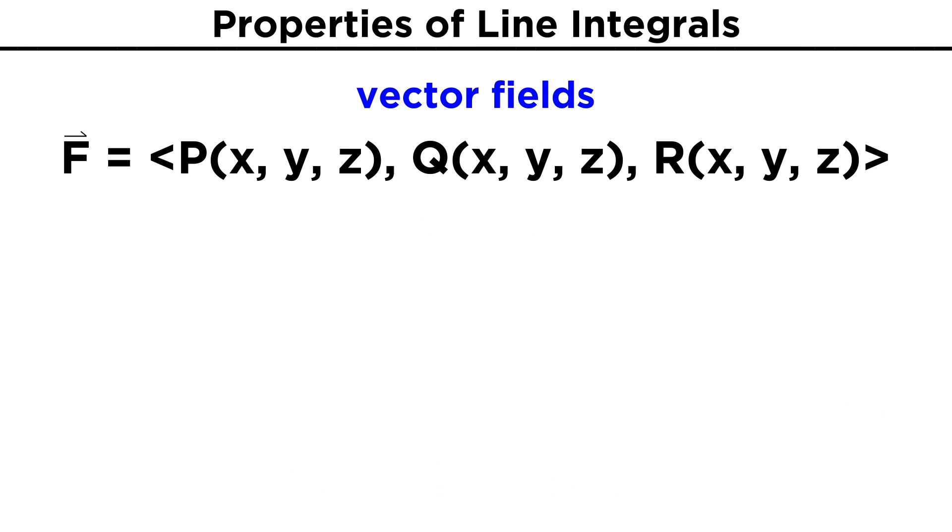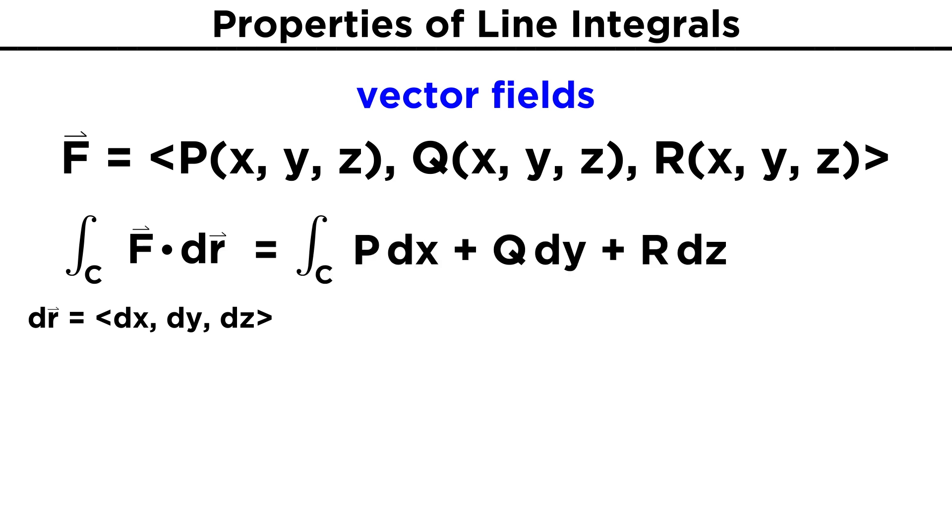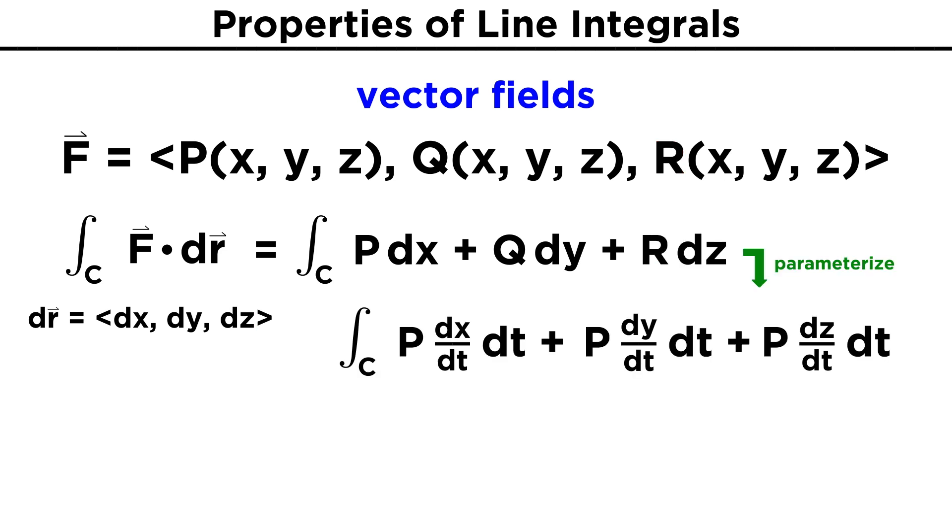Additionally, line integrals become very useful with vector fields. Recall that vector fields have the form f equals p x, y, z, q x, y, z, r x, y, z. The line integral of this vector field along some curve c is given by the integral along c of f dot dr, where dr is the vector dx dy dz. Going through the dot product, we can see that the line integral can be expressed as the integral over c of p dx plus q dy plus r dz. If our curve is parameterized by t, the dx can be replaced with dx dt dt, the dy by dy dt dt, and the dz by dz dt dt.